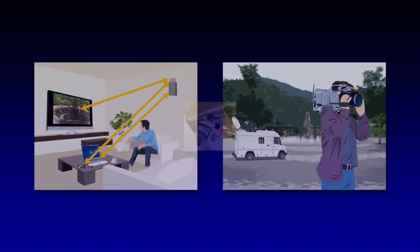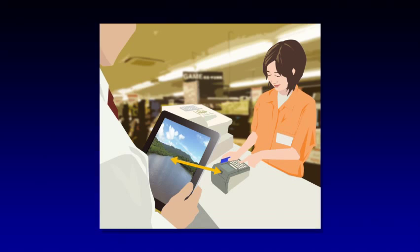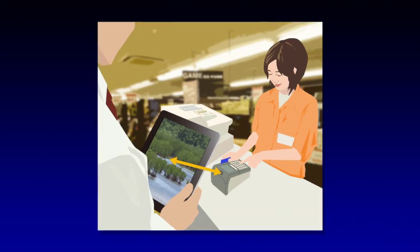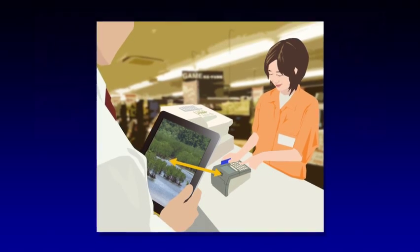For example, a consumer can purchase high-capacity rich content at a shop and receive it instantly on a mobile terminal.